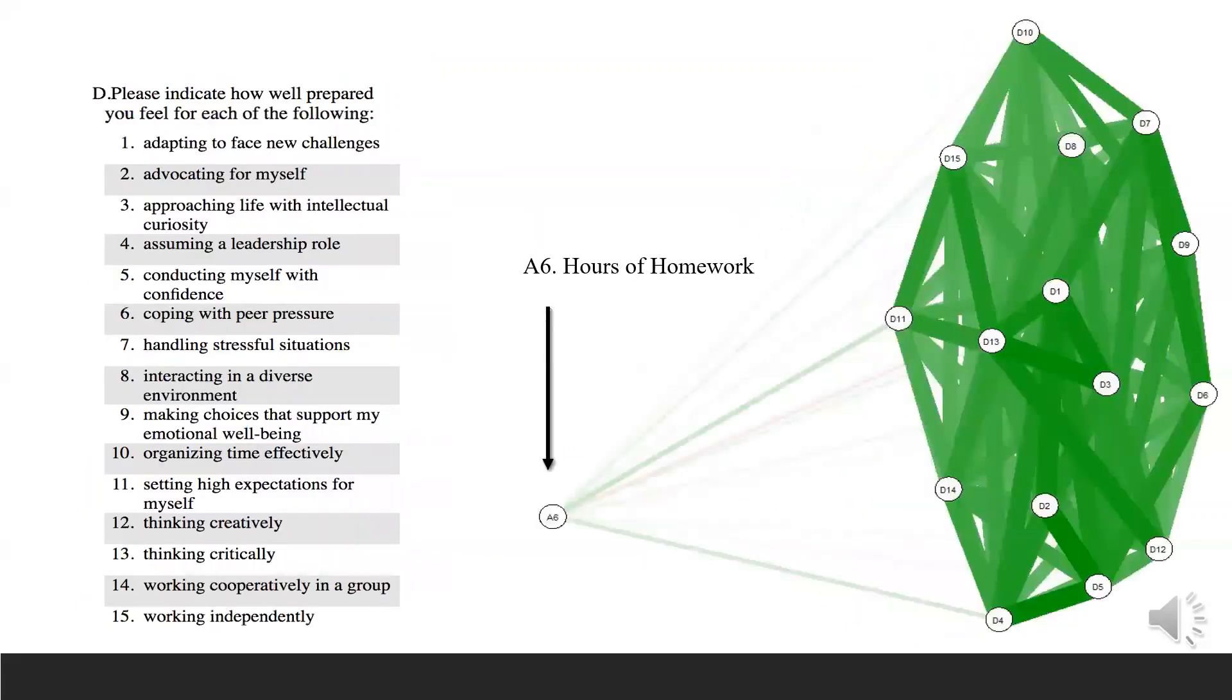Time spent on homework matched up with self-appraised preparedness across 15 skills reveals positive correlation with setting high expectations for myself, question D11. Negative correlation is shown for preparedness in making choices that support my emotional well-being, D9.